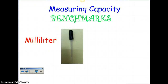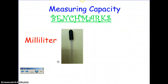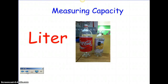Let's talk about our benchmarks for capacity. A milliliter is really tiny. When you look at a dropper — any time you've had a dropper, either for eye drops or for medicine — that's a milliliter. So that's something that's really small. Then you have a liter. If you've ever seen one of these soda bottles, that would be a liter.